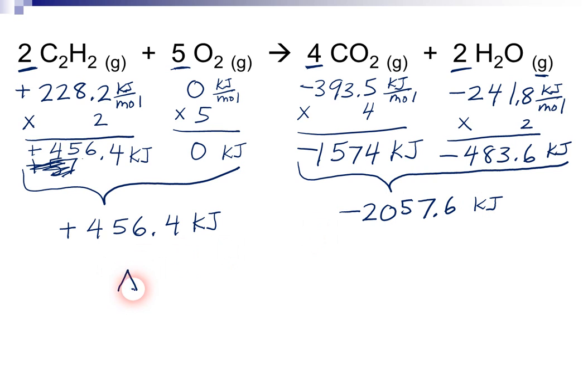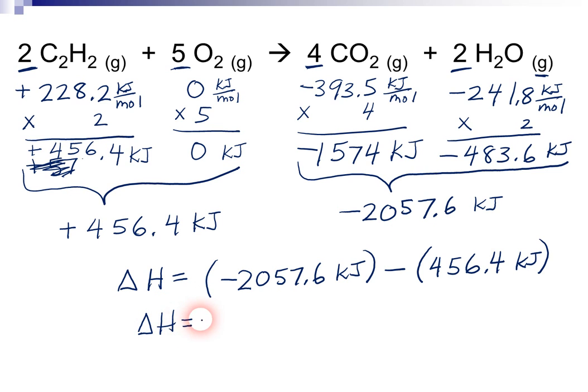And as you should remember from the equation, delta H equals the sum of the products minus the sum of the reactants. So, right side minus left side, that's negative 2,057.6 kilojoules minus the 456.4 kilojoules. And so, when we plug that into our calculator, we key that in. And I'm hoping you're getting the same answer as I'm getting, which should be that delta H equals negative 2,514 kilojoules.